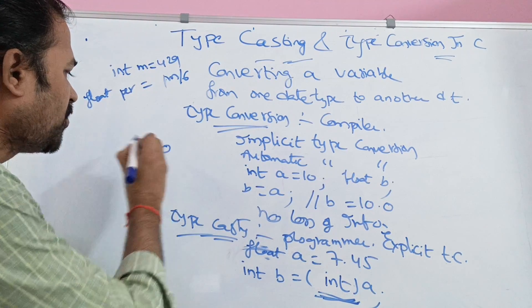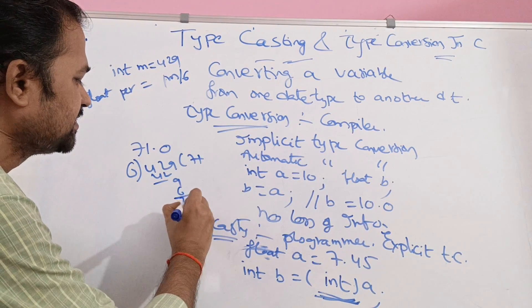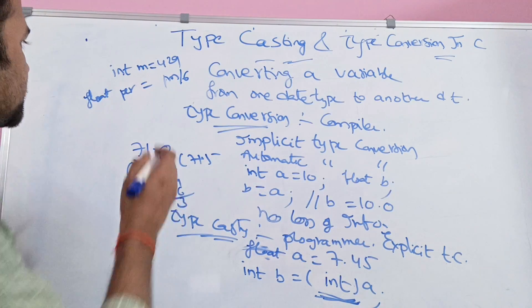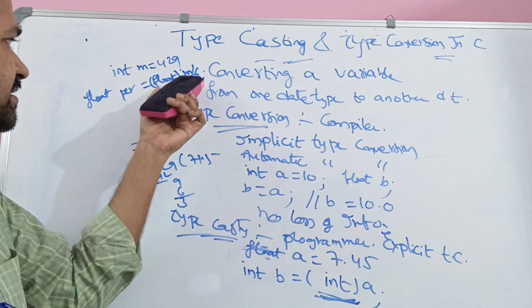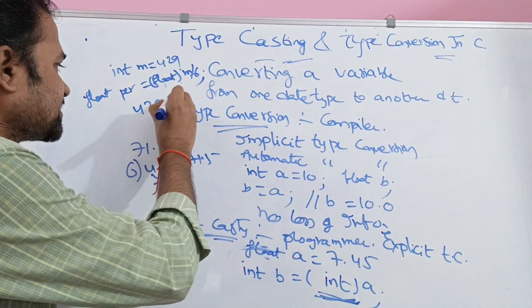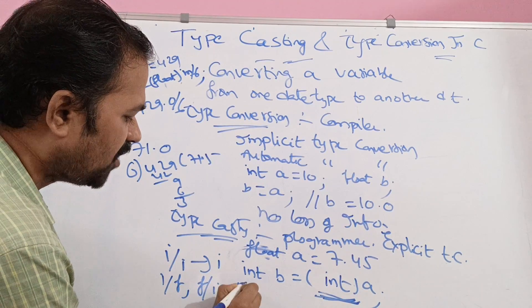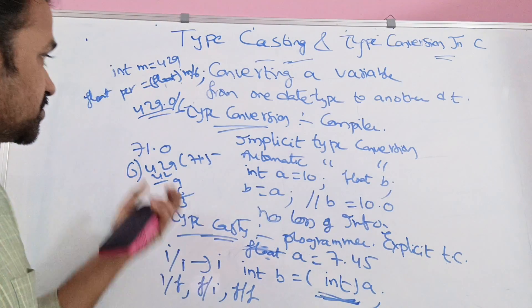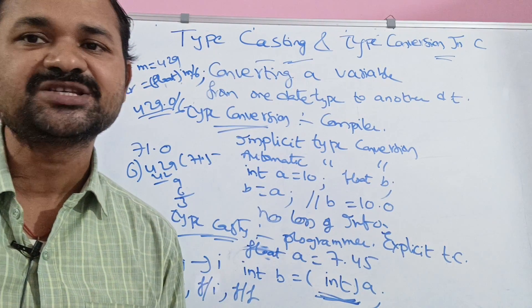But the actual result of 429 / 6 is 71.5. To get the correct float result, we use type casting: float percentage = (float)marks / 6. This converts marks to float — 429.0 divided by 6. Float divided by int produces a float result, so we get 71.5. This is the difference between type casting and type conversion in C programming — implicit type conversion is done by the compiler, while explicit type casting is done by the programmer.